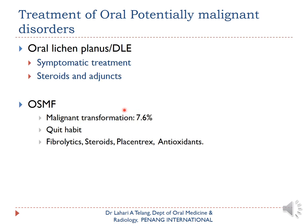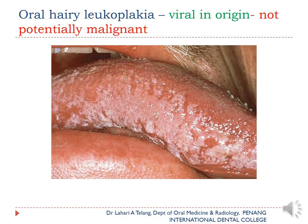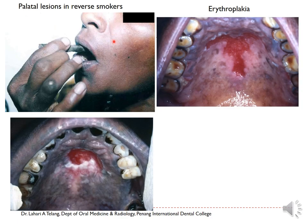For other potentially malignant disorders like lichen planus or discoid lupus erythematosus, symptomatic treatments including steroids and adjuncts are implemented — covered in detail in the red and white lesion chapter. For oral submucous fibrosis, treatment includes quitting habits, fibrinolytics, steroids, placental extracts, and antioxidants. Oral hairy leukoplakia — viral in origin, caused by Epstein-Barr virus — and palatal lesions from reverse smoking leading to erythroplakia require immediate biopsy given their very high rate of malignant transformation.